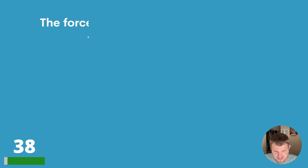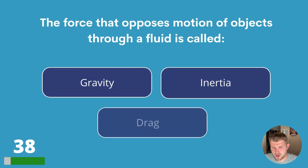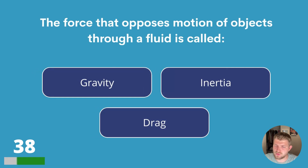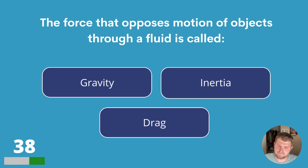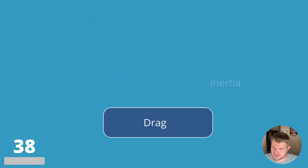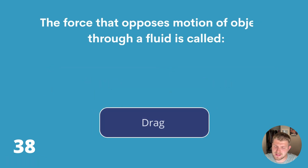Question thirty-eight. The force that opposes motion of objects through a fluid is called gravity, inertia or drag? The answer is drag.